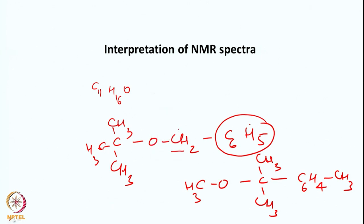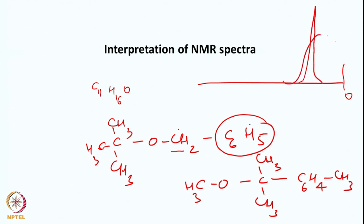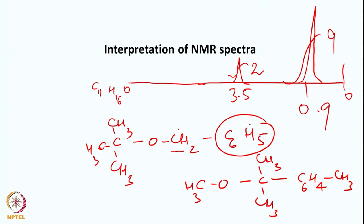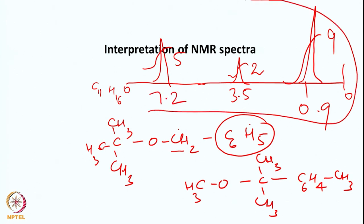These three peaks are essentially like this. Near 0 ppm we have the equivalent nine protons contributed by the three methyl groups — a peak corresponding to nine protons at around 0.9 ppm. Then we have the methylene group contributed by two protons at around 3.5 ppm, and then far downfield around 7.2 ppm, one peak given by the five aromatic protons. This is our spectrum for this molecule.